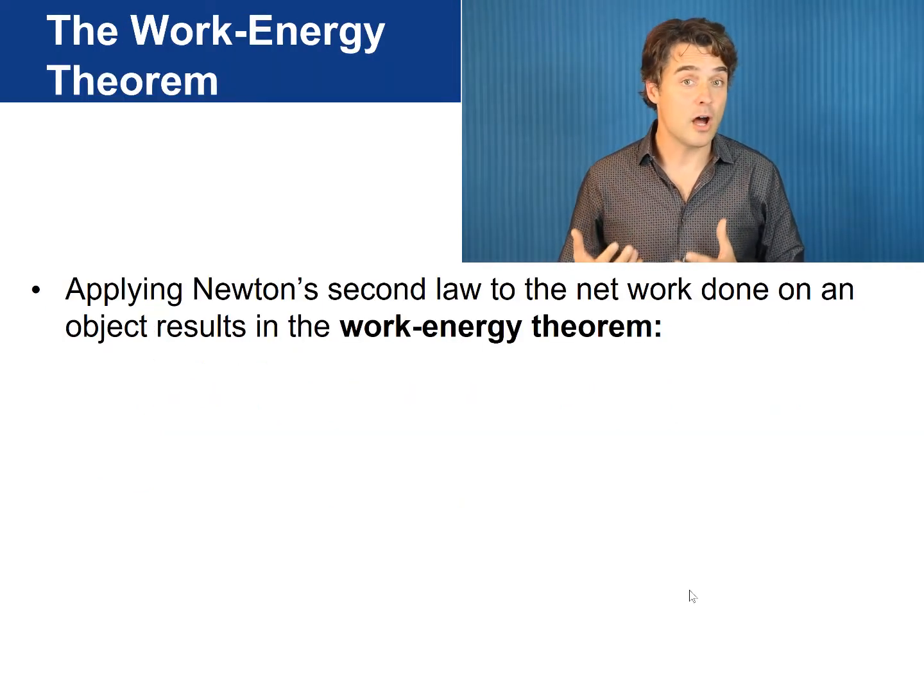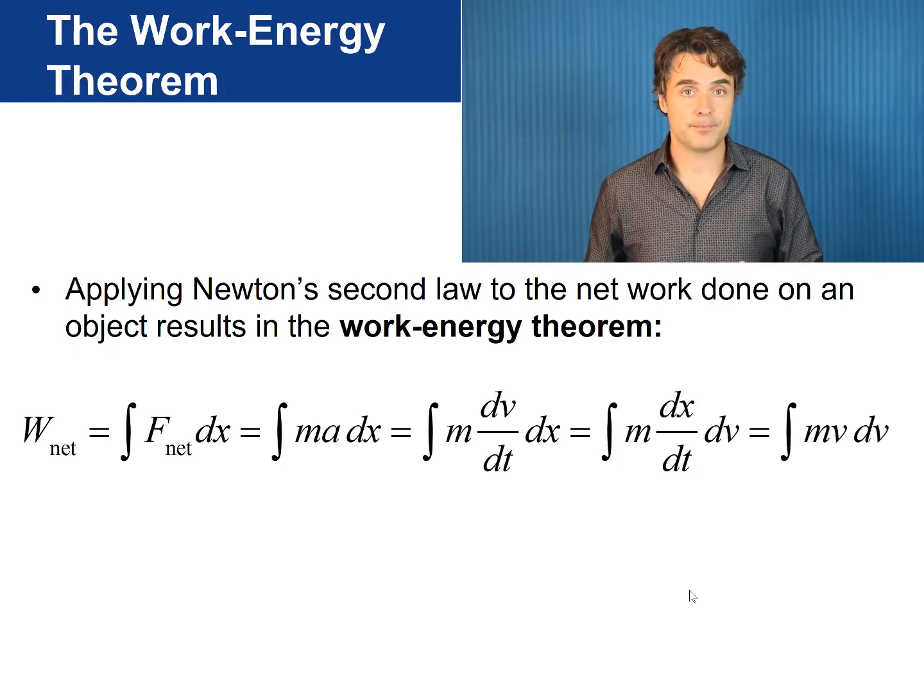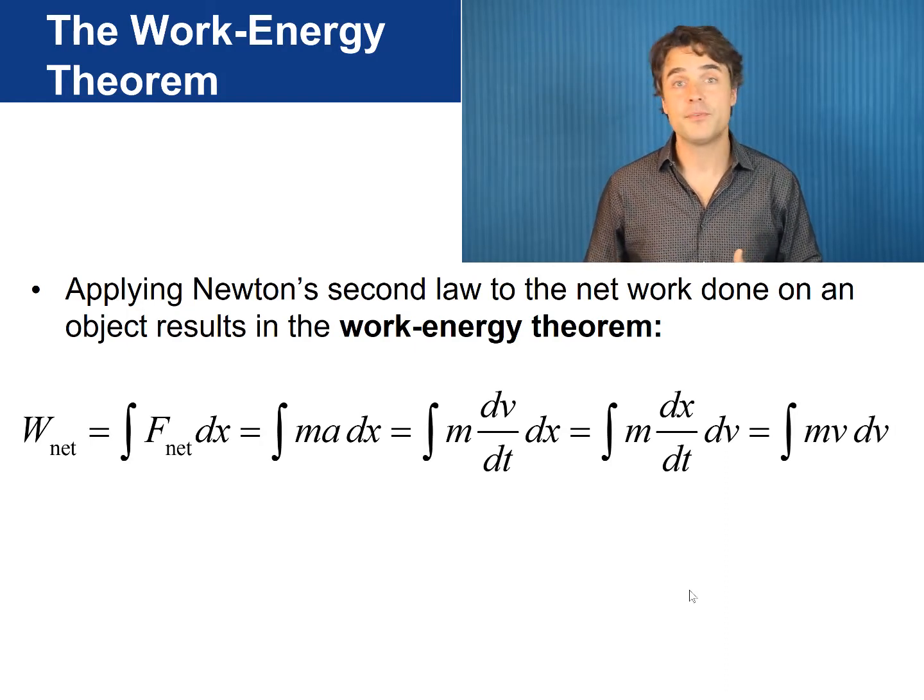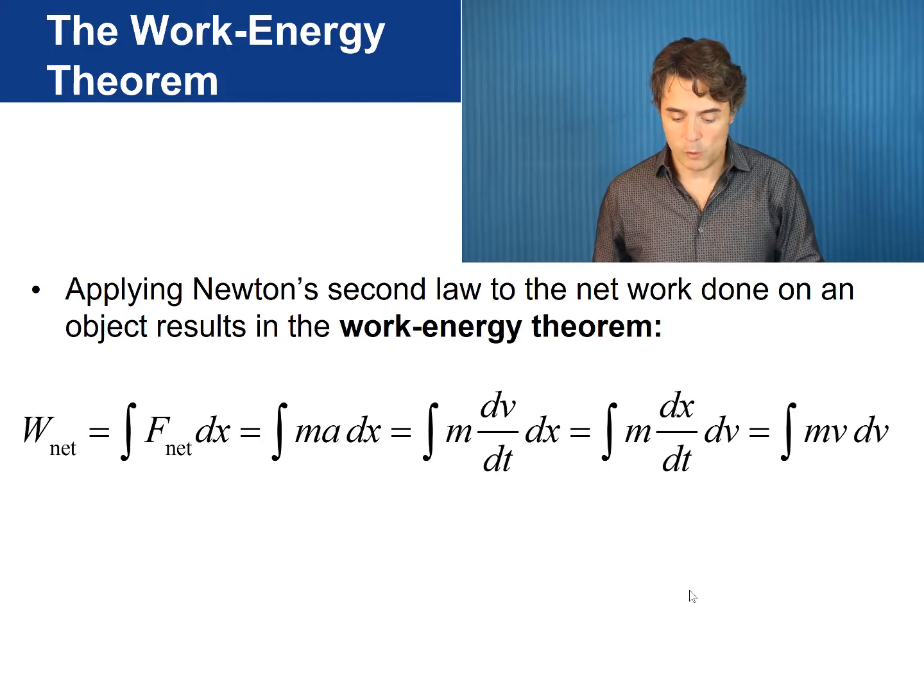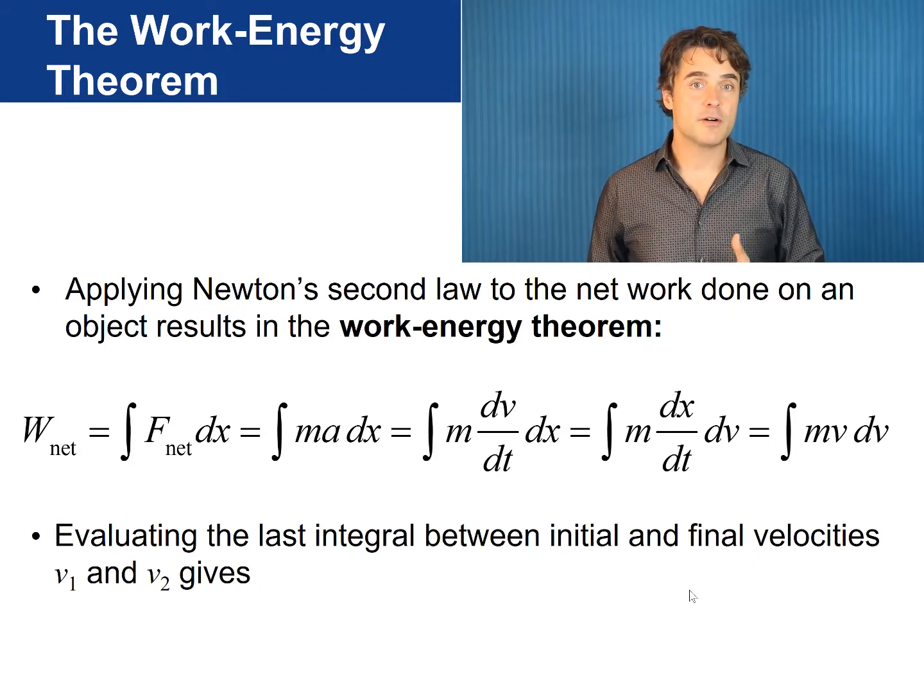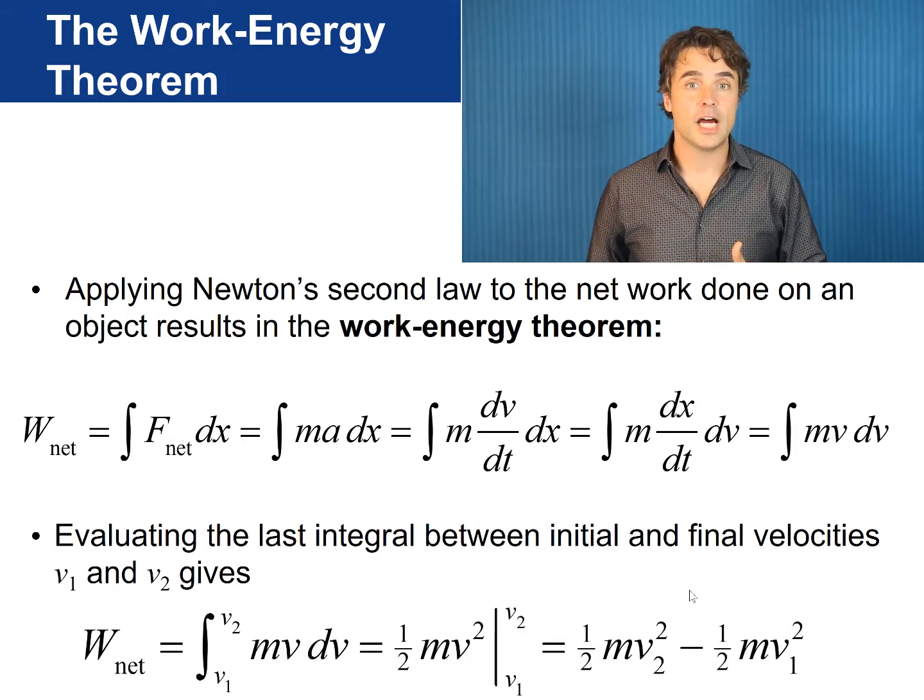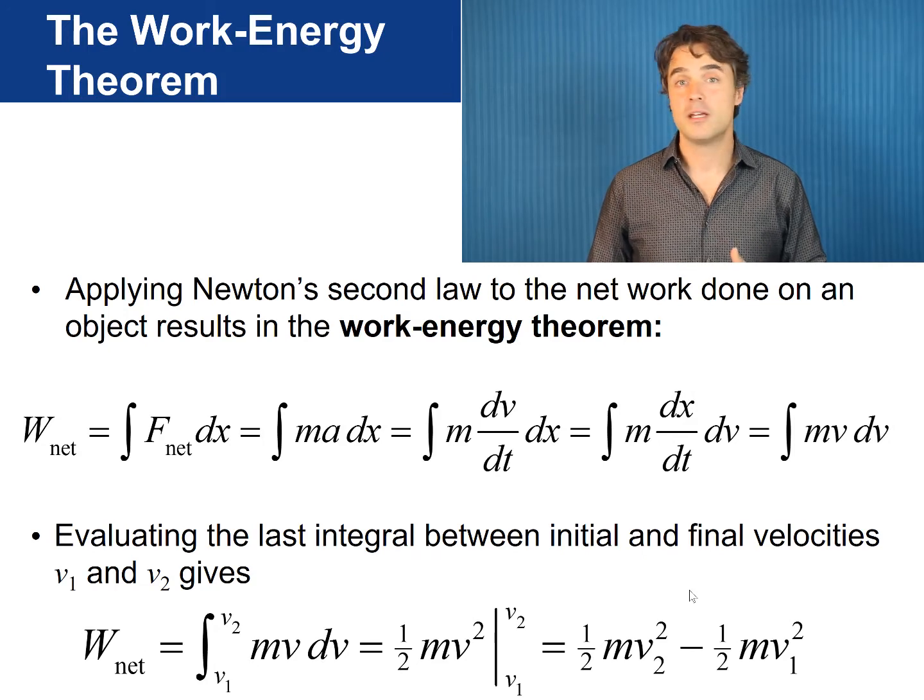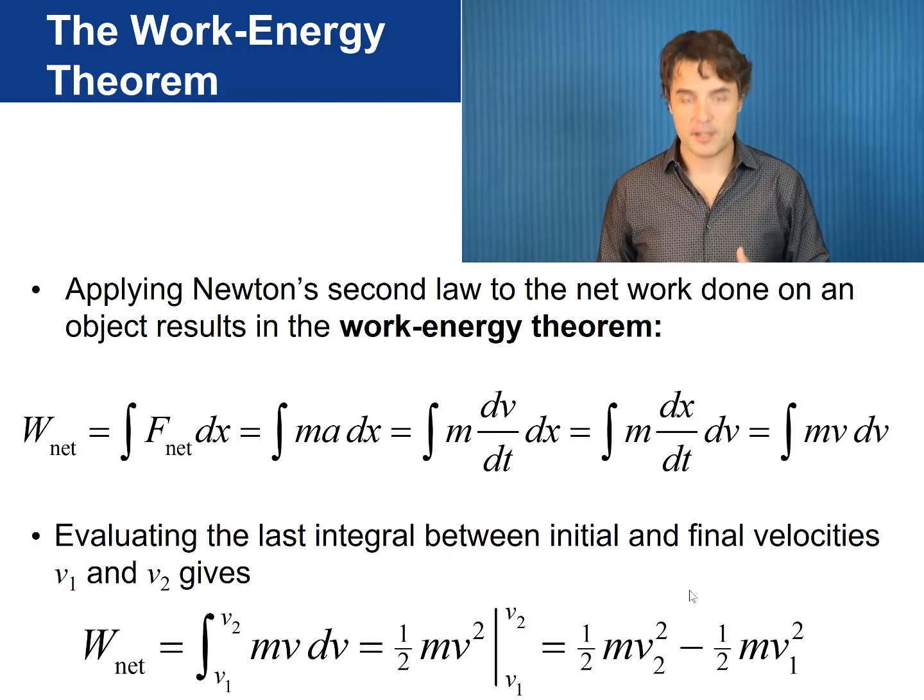If you apply Newton's second law, F net equals m times a to an object, you can derive something called the work energy theorem. W net is the integral of m times a dx, where a is the acceleration, which is the time derivative of the velocity v. If we rearrange these differentials, this becomes an integral over v of m times v. If you integrate from some initial velocity v1 to a final velocity v2, this is the integral of a polynomial with n equals 1. And you get 1 half m times v squared. Plugging in the limits and you get the net work equals 1 half m v2 squared minus 1 half m v1 squared.